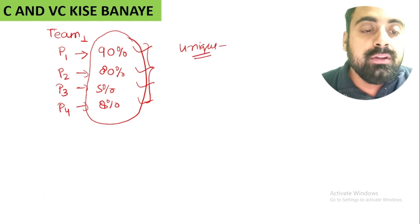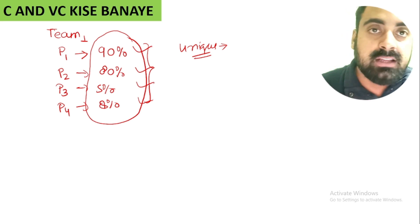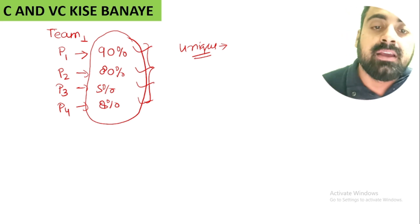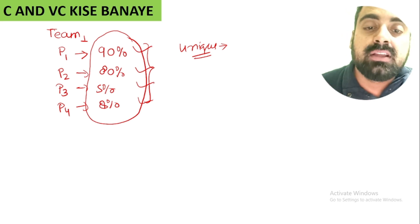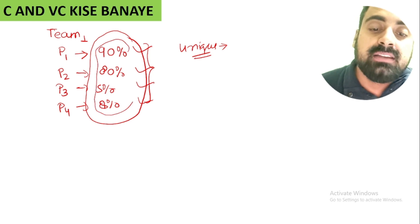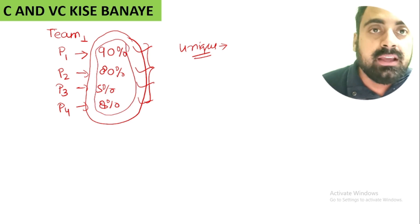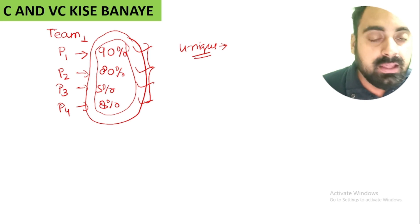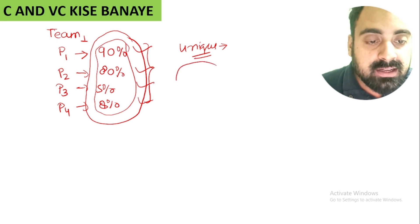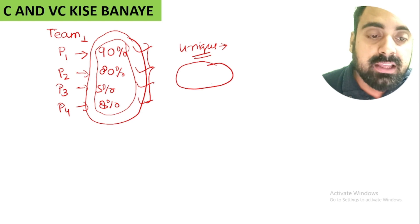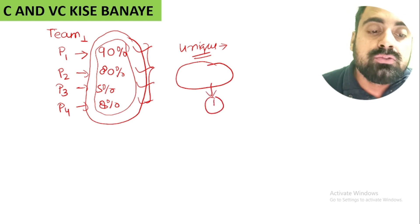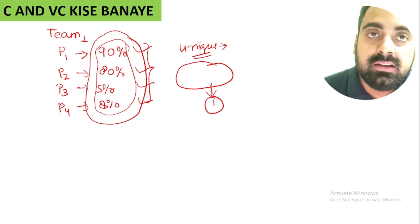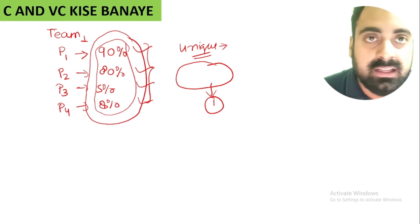In the last video, we discussed how to make a unique team. We start to minimize the selection percentage of our team. As much as you minimize the selection value, you will be able to win with a unique team.